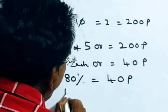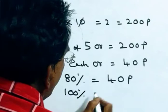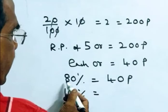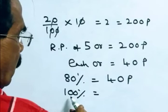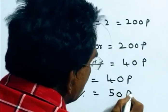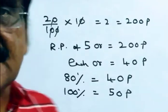We want 100%. If 80% is equal to 40, then 100% is equal to 50 pies. So, 50 pies is the original price.